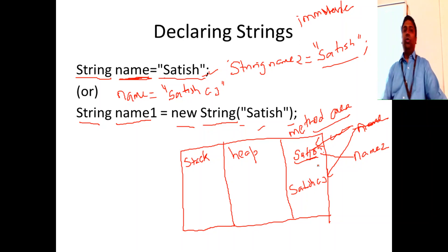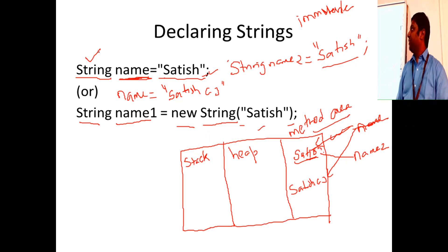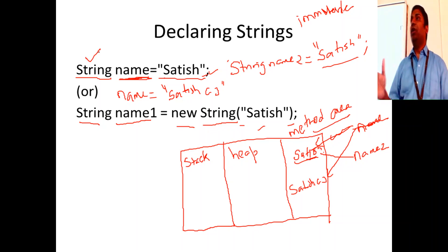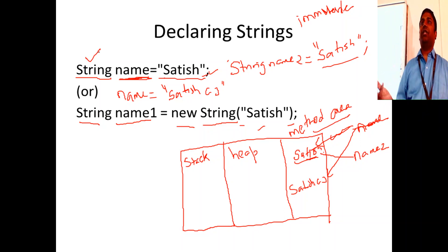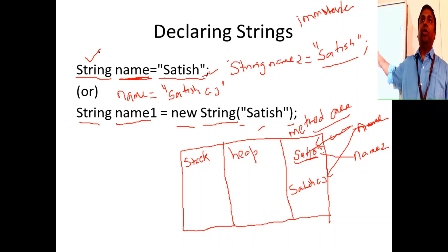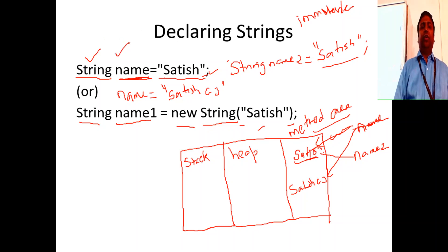When you use the String class, the strings are immutable. There are other classes like StringBuilder and StringBuffer which are used for creating mutable string objects, but here we are only talking about the immutable String class.